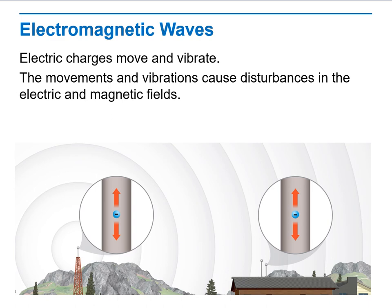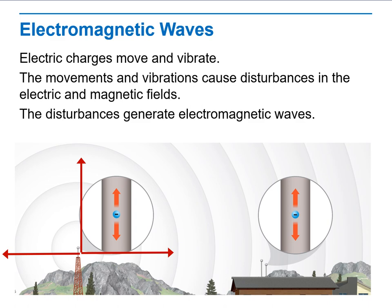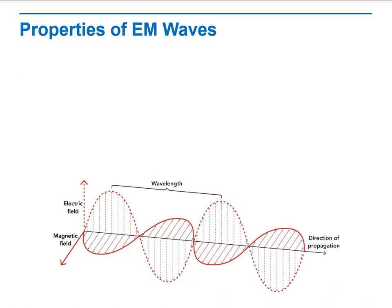Movement and vibration of electric charges create disturbances in the electric and magnetic fields, which are always perpendicular to each other.